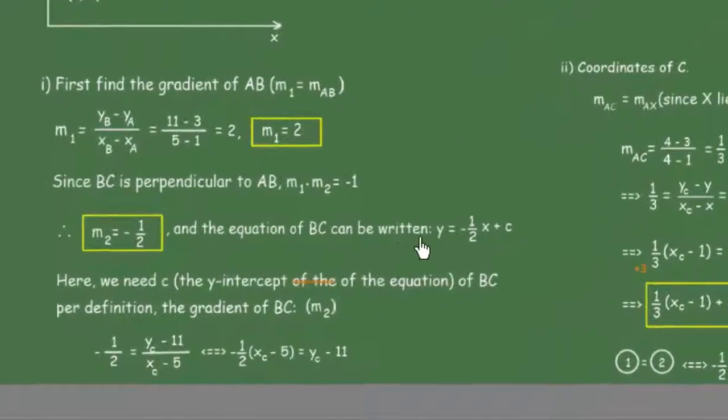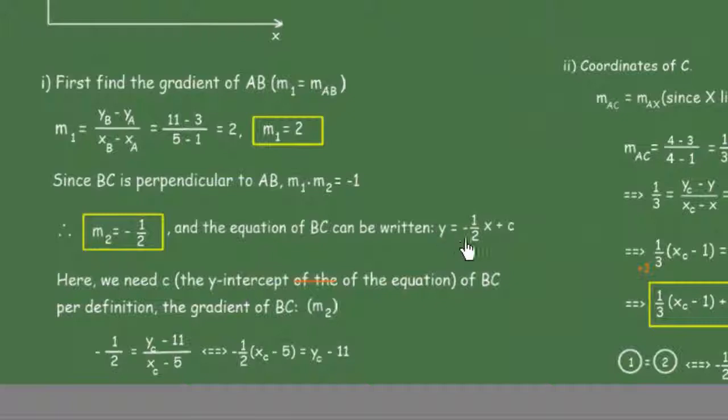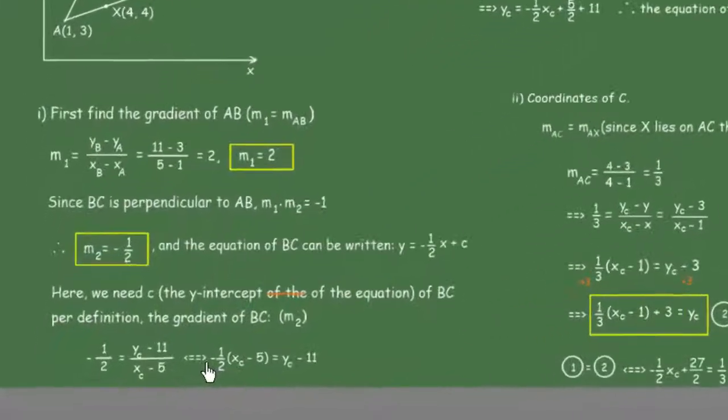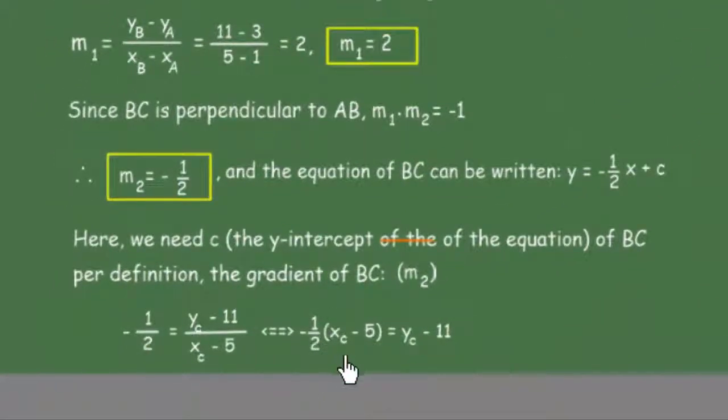The equation BC can be written as y = -1/2x + c, and we need to find this c, the y-intercept of the equation. The gradient of BC, m_BC = -1/2 = (y_C - 11)/(x_C - 5). This means -1/2(x_C - 5) = y_C - 11.